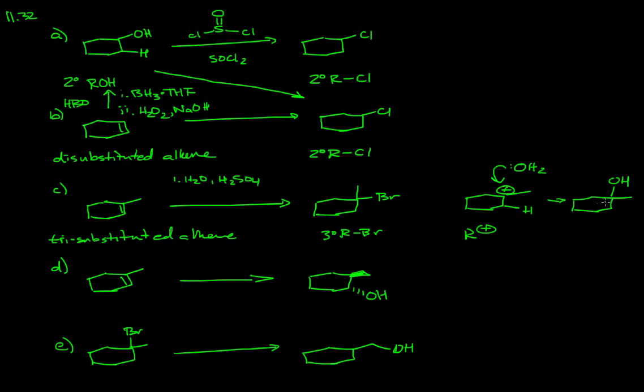We're proceeding through a tertiary carbocation. Water can then add to that to give you the tertiary alcohol. Then we're going to do SN1 chemistry. In a second step, we can treat with hydrogen bromide. That'll protonate the alcohol to regenerate the tertiary carbocation, and then bromide ion will attack that position to end up with the desired product.